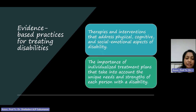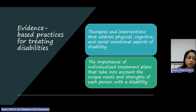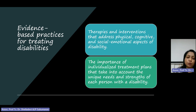In contrast, the social model of disability emphasizes societal barriers and attitudes as the primary cause of disability. According to this model, disability is not solely a result of individual impairment, but rather the result of inaccessible environments and social exclusion. The social model highlights the need for structural change to create an inclusive society and remove barriers that hinder full participation and equality for individuals with disabilities.